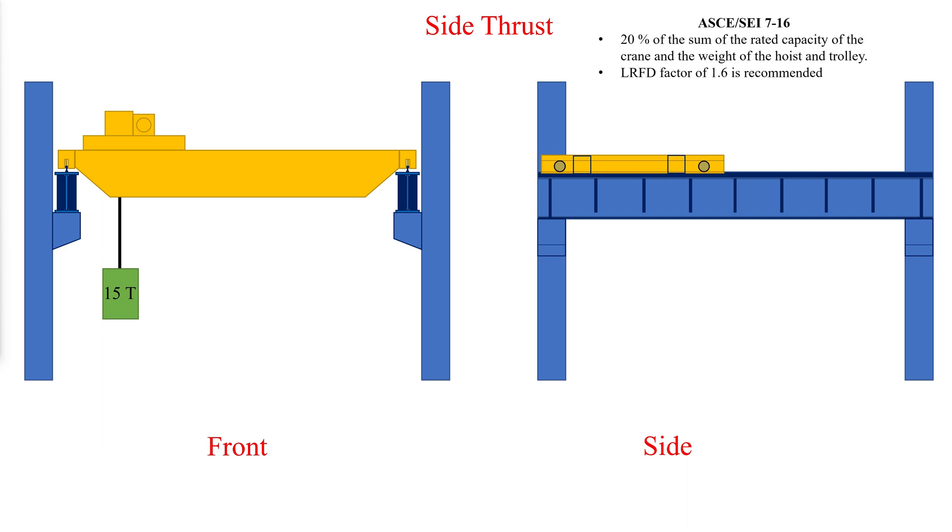According to ASCE 7-16, the lateral force on crane runway beams with electrically powered trolleys shall be calculated as 20% of the sum of the rated capacity of the crane and the weight of the hoist and trolley. The lateral force shall be assumed to act horizontally at the traction surface on a runway beam in either direction perpendicular to the beam and shall be distributed with due regard to the lateral stiffness of the runway beam and supporting structure. The recommended LRFD load magnification factor is 1.6.